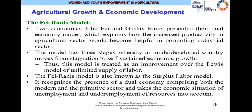Another interesting model is the Fei-Ranis model from economists John Fei and Gustav Ranis, who presented their own dual economy model. It explains how increased productivity in the agricultural sector will be helpful in promoting the industrial sector. They demonstrated that in three stages, an underdeveloped country can move from stagnation to self-sustained economic growth. Hence, the Fei-Ranis model is treated as an improvement over the Lewis model of unlimited labor supply. The model recognizes the presence of a dual economy comprising both the modern and the primitive sector, and takes unemployment and underemployment into account.